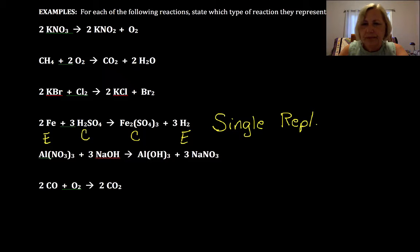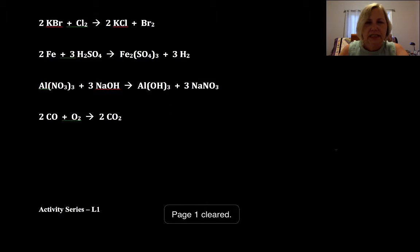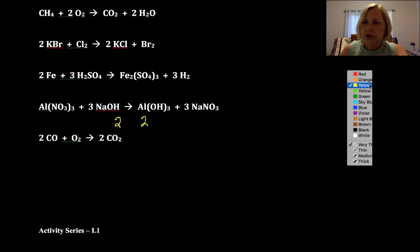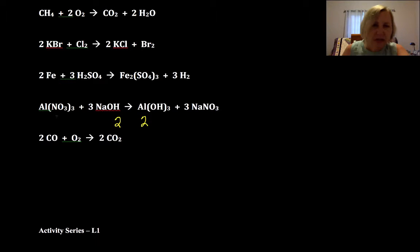Here I've got two and two. I want to distinguish that from a double replacement. So I have to label those: an element and a compound, compound and an element. That's what's going to tell me this is a single replacement. And then just a couple more here. I've got again two reactants and two products. So I have to make sure I distinguish double and single. This is a compound plus a compound, new compound, new compound. That's what makes that a double replacement.